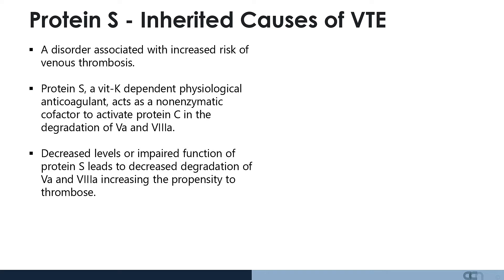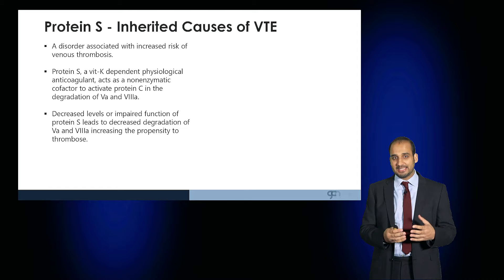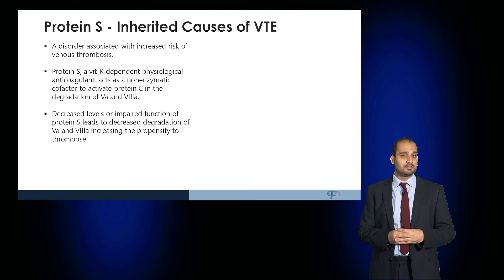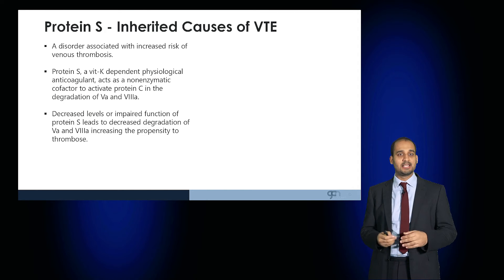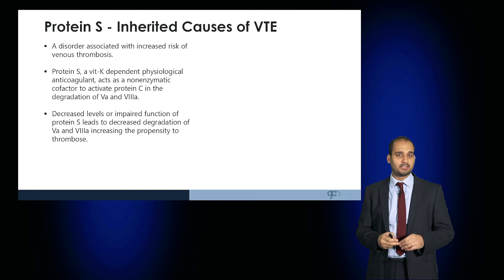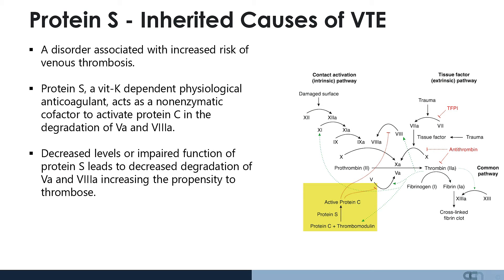Protein S is another disorder associated with venous thrombosis. Protein S is a vitamin K dependent physiological anticoagulant. It acts as a non-enzymatic cofactor to activate protein C, which degrades factor V and factor VIII.